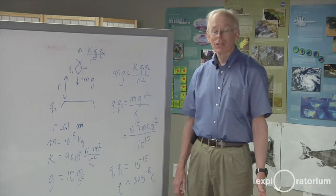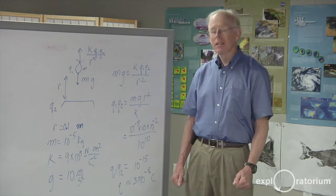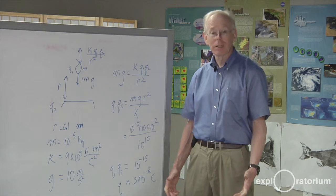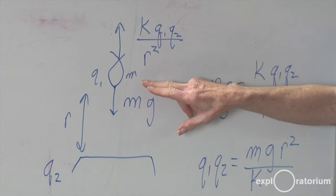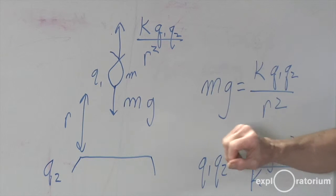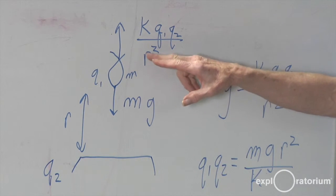One way to take this experiment further is to do some mathematics. I can actually estimate the amount of charge that I'm dealing with in this situation. And I do that by first drawing the forces on the tinsel. There's gravity down, which is its mass times the acceleration of gravity, and the electrostatic repulsion up.